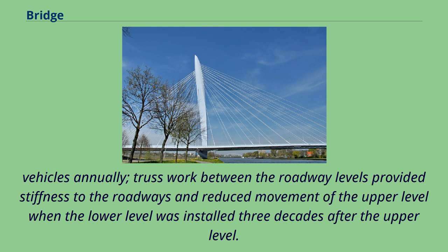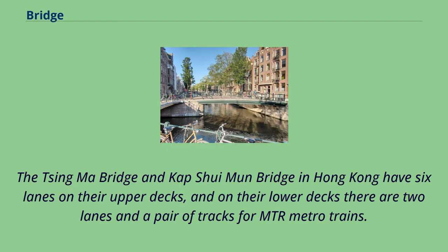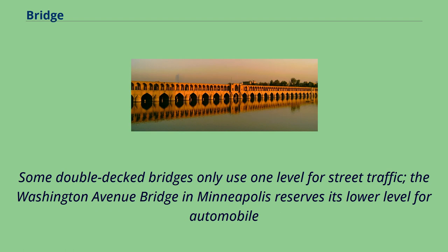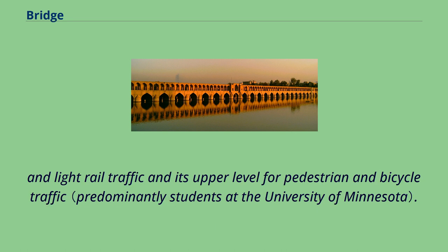Truss work between the roadway levels provided stiffness to the roadways and reduced movement of the upper level when the lower level was installed three decades after the upper level. The Tsing Ma Bridge and Kap Shui Moon Bridge in Hong Kong have six lanes on their upper decks, and on their lower decks there are two lanes and a pair of tracks for MTR metro trains. Some double-decked bridges only use one level for street traffic — the Washington Avenue Bridge in Minneapolis reserves its lower level for automobile and light rail traffic, and its upper level for pedestrian and bicycle traffic.